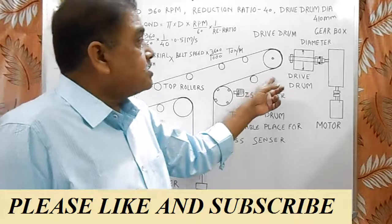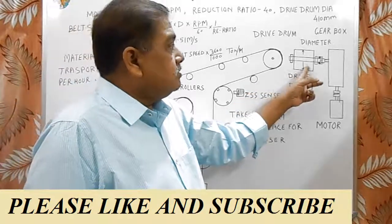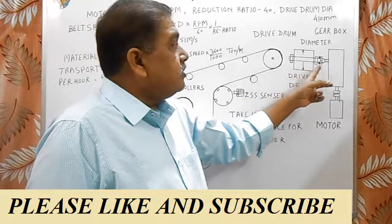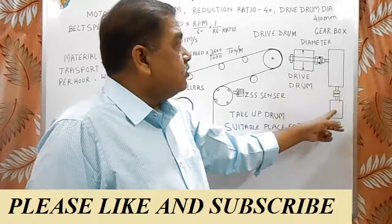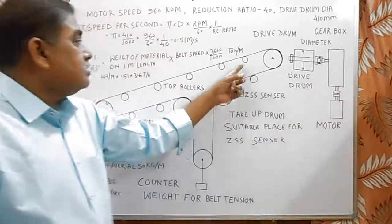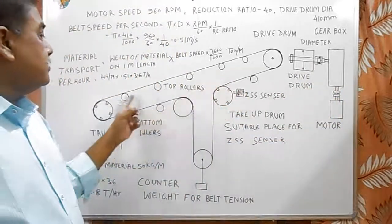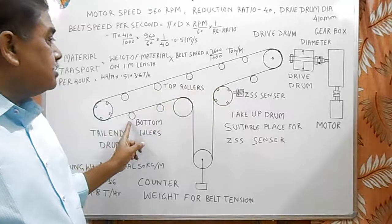Here drive system has drive drum, gearbox and motor. These are top support rollers and these are bottom idlers.